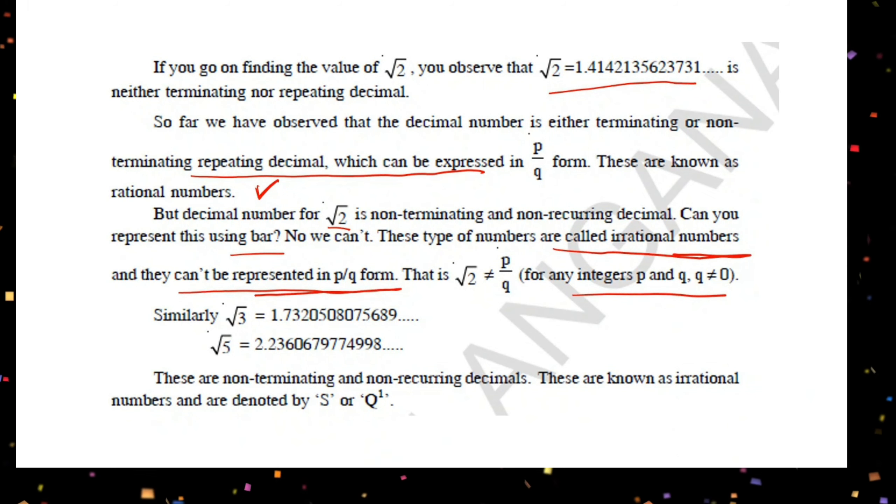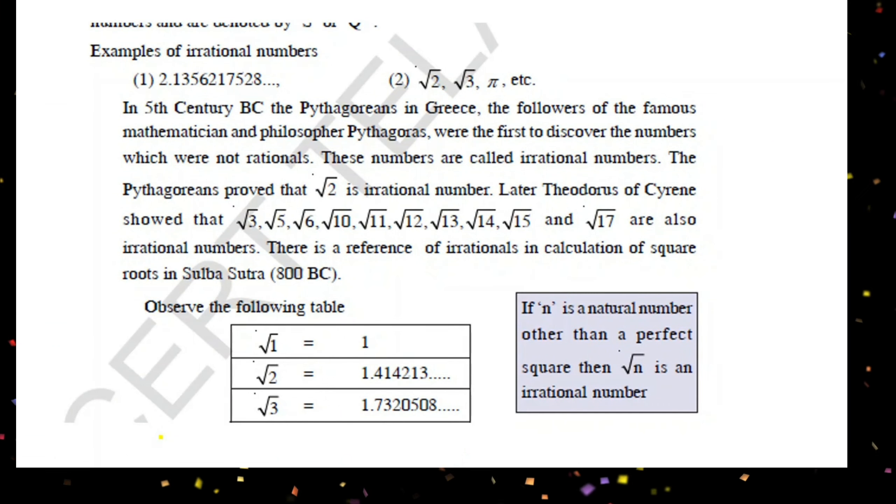Non-terminating, non-recurring decimals are irrational numbers. These numbers cannot be represented in p by q form, where p and q are integers and q not equal to 0. Root 3, root 5, and other such values are also non-terminating, non-recurring decimals. Pi is also an irrational number. The actual definition of pi is circumference of circle by its diameter, C by D. 22 by 7 is just the approximate value.